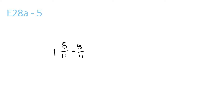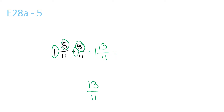For this question, it's just 1 plus nothing, which is 1. Then 8 plus 5 is 13. And bring the 11 over. So it's 1 and 13 over 11. That is the same as 1 and 2 over 11. Don't forget this 1. So 1 and 2 over 11 plus 1, which is 2 and 2 over 11.